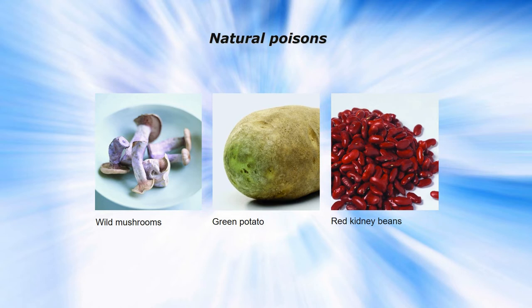Green potatoes or sprouting potatoes contain a build-up of a glycoalkaloid poison that comes from chlorophyll, which can have harmful effects on the human body especially in the young or elderly. Don't use green potatoes — don't even try to peel away the green or rub away the sprouts, because there's a poison developing underneath the sprouts.